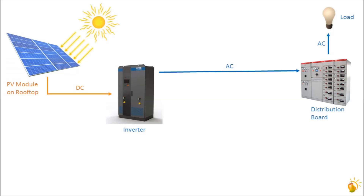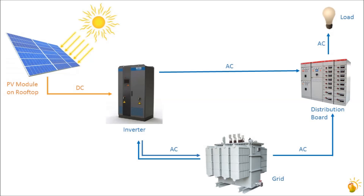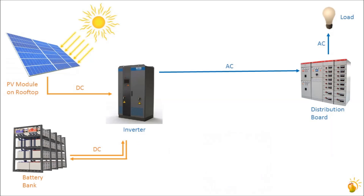It should be noted that a solar plant will need, in most cases, some backup power source. The backup power source could be the grid, for instance, or a storage mechanism such as batteries. This is where we need to consider the peculiar way in which solar plants work.